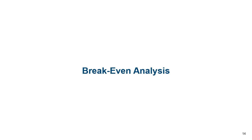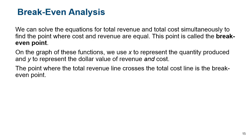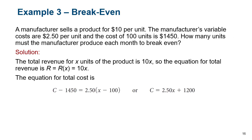A break-even point is where cost and revenue are the same — that is, where profit equals zero. You can solve it two different ways: you could set your cost function equal to your revenue function and solve, or you can take your profit function, set it equal to zero, and solve. They do the exact same thing.